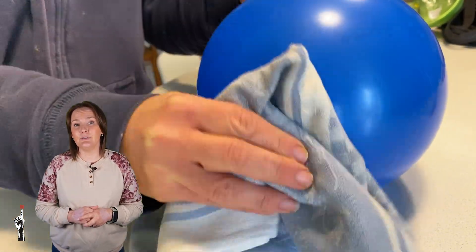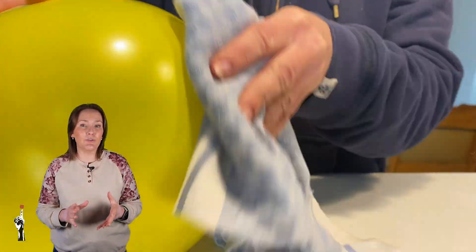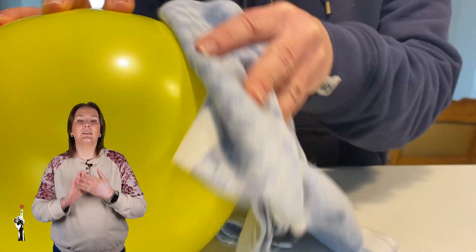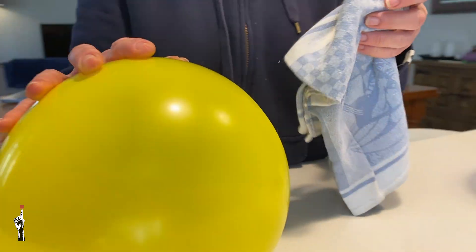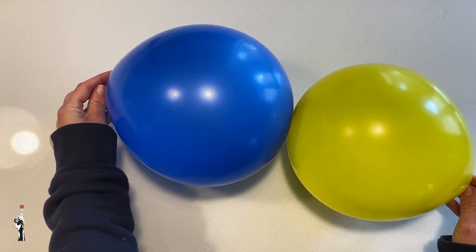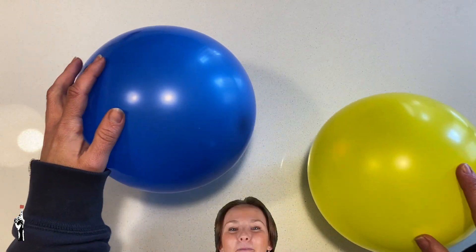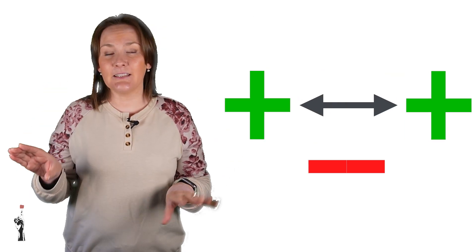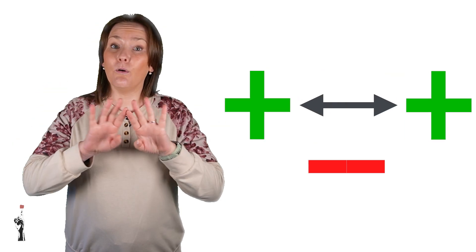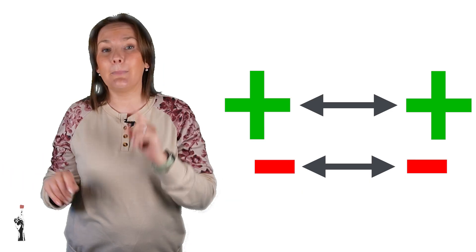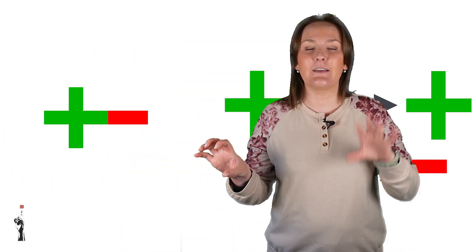Now we've seen how opposite charges attract, but what about same charges? Here are two inflatable balloons. Let's rub them both on the same cloth to give them the same type of charge. Watch closely what happens when we bring them close to each other — they push away. That's because the same charges repel. So remember, Grade 8: positive and positive charges repel, and negative and negative charges also repel, but positive and negative charges attract each other.